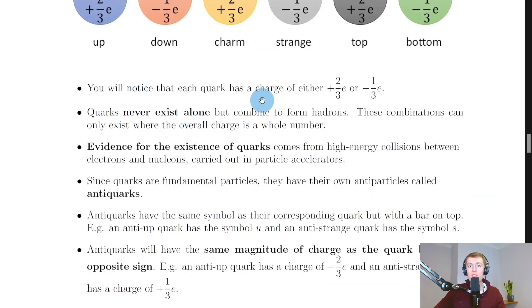You'll notice that each quark has a charge of either plus two-thirds e or minus one-third e. Quarks never exist alone but combine to form hadrons. These combinations can only exist where the overall charge is a whole number, and that's an important rule that you need to remember.